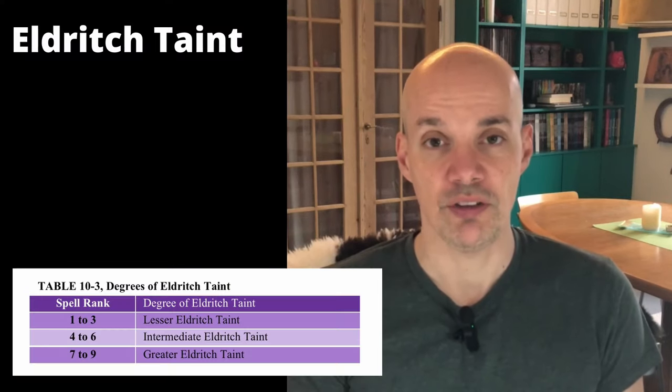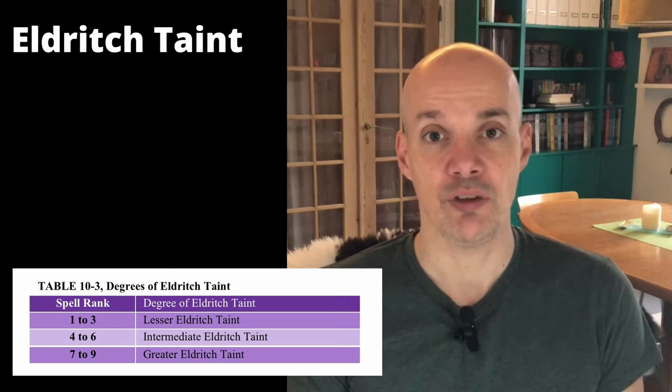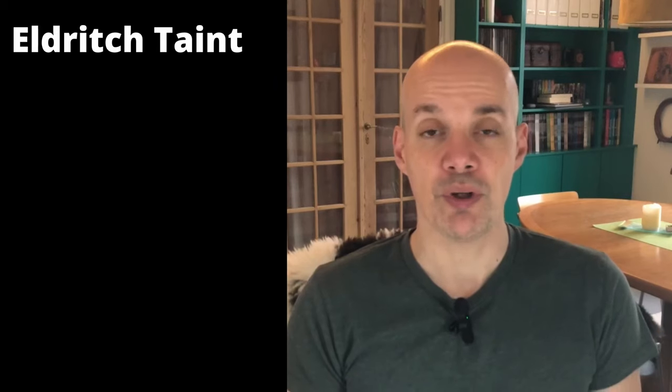The severity of Eldritch Taint sustained depends on the rank of the spell being cast. A rank 1–3 spell causes lesser taint, a rank 4–6 spell causes intermediate Eldritch Taint, and a rank 7 or higher spell causes greater Eldritch Taint. When taint is confirmed, the caster rolls a d10 plus their luck die and subtracts the spell rank. As with fumble checks, rolling low is bad and rolling high is less bad.